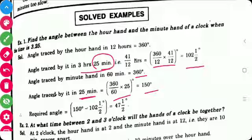So, the required angle between the hour hand and the minute hand is 150 minus 102 and 1 half degree, that is 47 and 1 half degree.